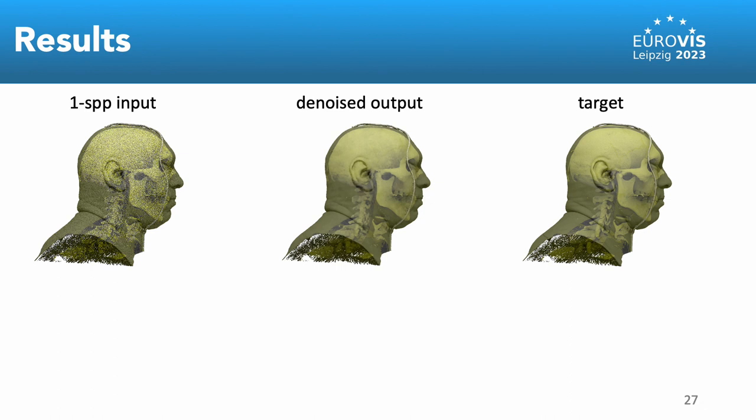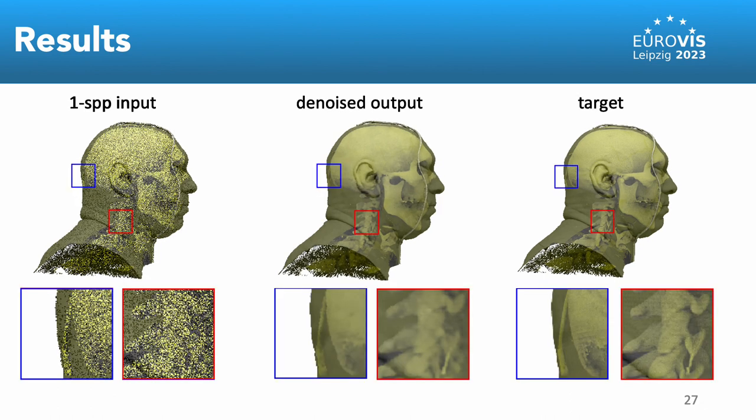Here we compare our denoised images with the target images which are rendered using 256 sample paths per pixel. Here we show a close-up view of the input rendered using one sample path per pixel,